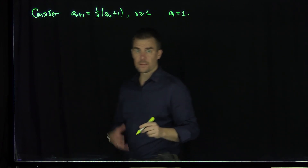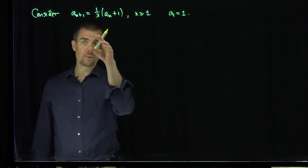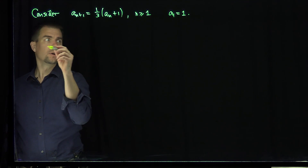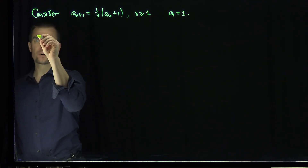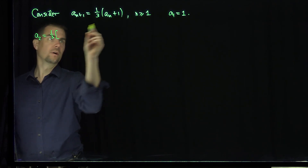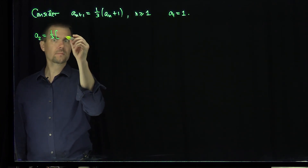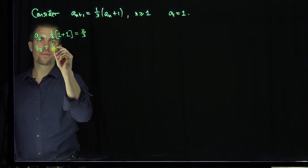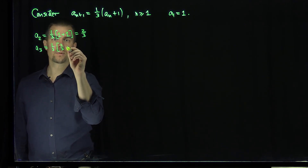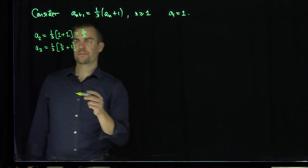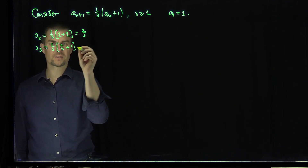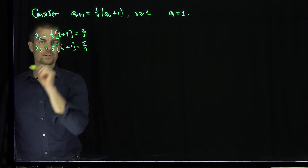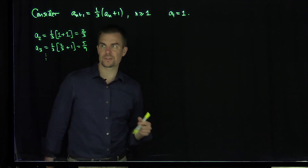Let's get a sense of what's happening with the sequence by plugging in the first couple of terms. We see that a_2 would be one-third of (1 + 1), which gives us two-thirds. Then a_3 will be one-third of (two-thirds + 1), giving us one-third times five-thirds, which is five-ninths. The sequence looks like it's decreasing.